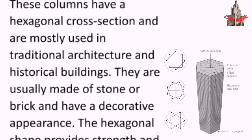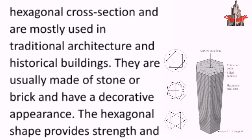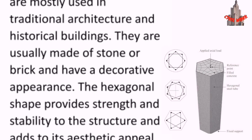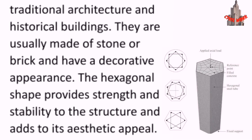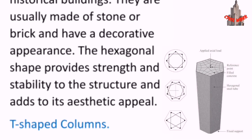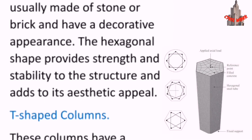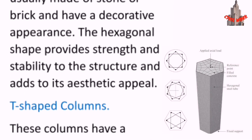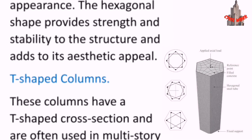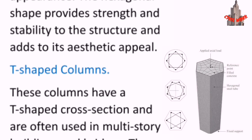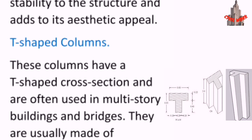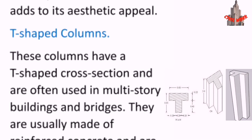Hexagonal columns have a hexagonal cross section and are mostly used in traditional architectural and historical buildings. They are usually made of stone or brick and have a decorative appearance. The hexagonal shape provides strength and stability to the structure and adds to its aesthetic appeal.